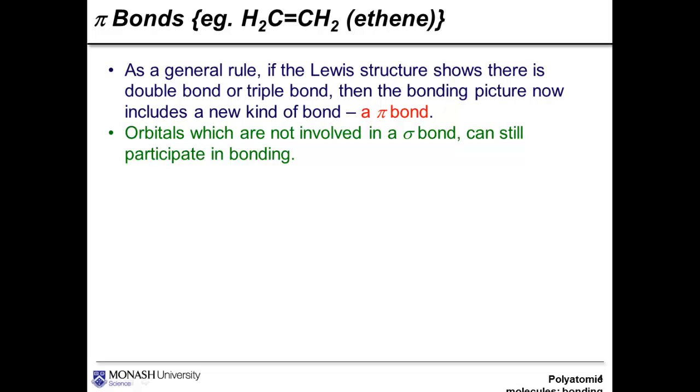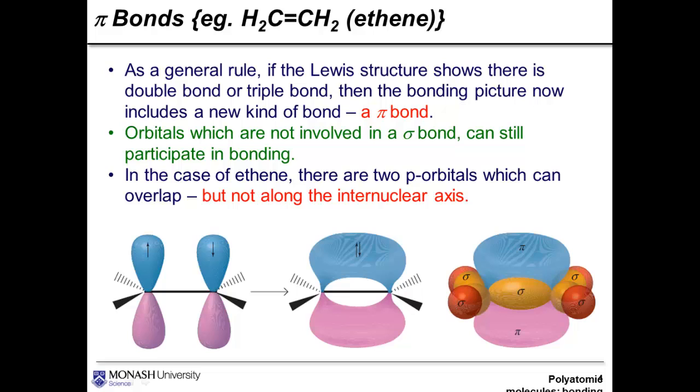Orbitals which are not involved in a sigma bond can still participate in bonding. In the case of ethene, there are two p orbitals which can overlap, but not along the internuclear axis. Just in case you're not sure what this molecule is, let me draw the Lewis structure. This is known as ethene. Two carbon atoms connected by a double bond, with single bonds coming from each carbon atom for two additional hydrogen atoms. It's called ethene.